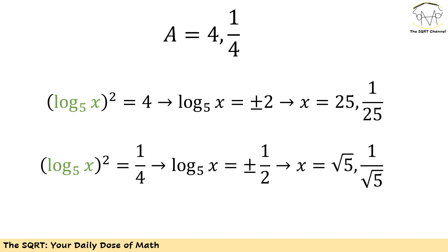On the other hand, we have (log_5 x)^2 = 1/4. So log_5 x is going to be plus or minus 1/2, and then x is going to be 5^(1/2), or √5, and x can be 5^(-1/2), which is basically 1/√5.